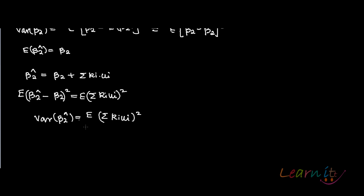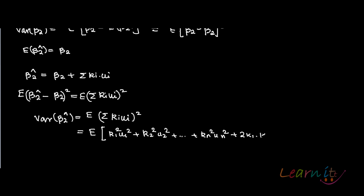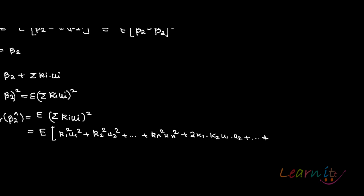How will you write this? This will be E of k1 squared u1 squared plus k2 squared u2 squared, and so on, plus the cross terms: 2 k1 k2 u1 u2, plus so on, to the last two terms k(n-1) kn into u(n-1) un.